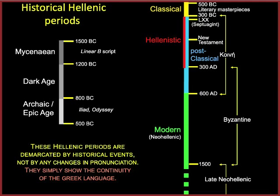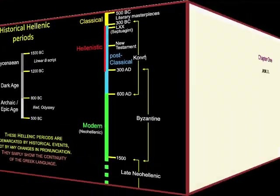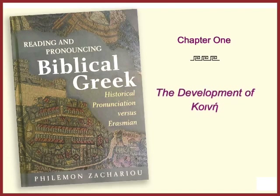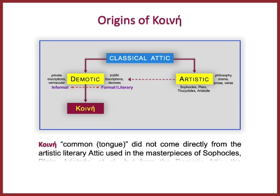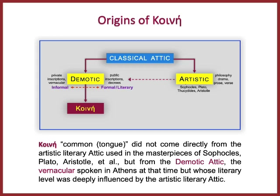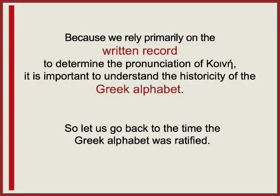Chapter one is on the development of Kini. Where does Kini come from? Kini did not come directly from the artistic literary Attic used in the masterpieces of Sophocles, Plato, Aristotle, and others, but from the demotic Attic—the vernacular spoken in Athens—whose literary level was deeply influenced by the artistic literary Attic. Because we rely primarily on the written record to determine the pronunciation of Kini, it is important to understand the historicity of the Greek alphabet.